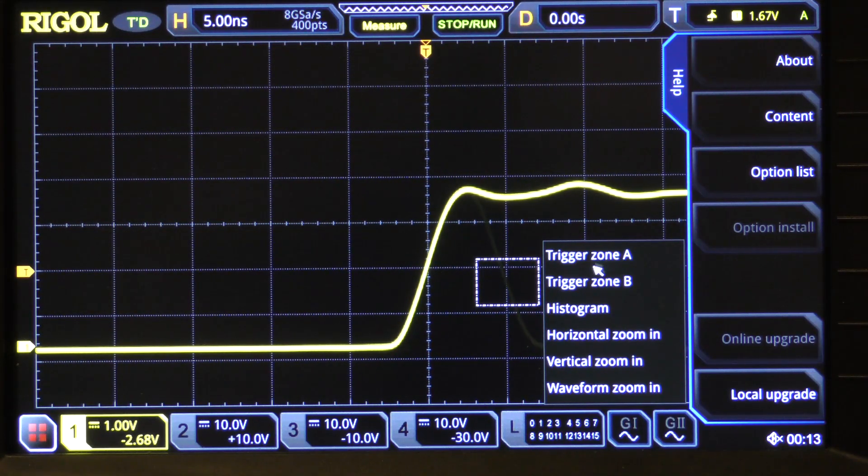We turn it loose and it says do you want to set up trigger zone A, B, do you want to create a histogram, do you want to zoom in horizontally, do you want to zoom in vertically, or do you want to zoom in on a waveform.